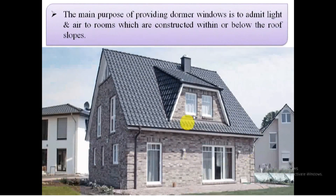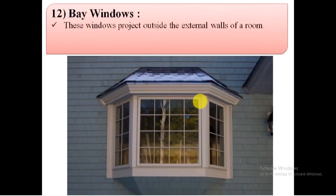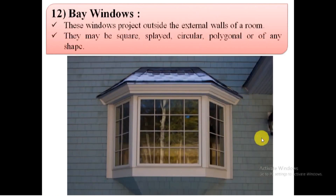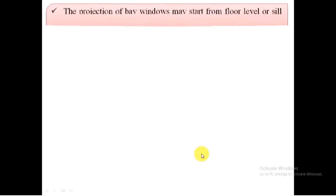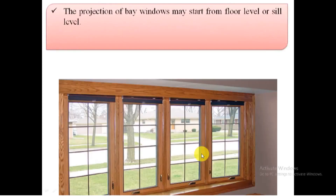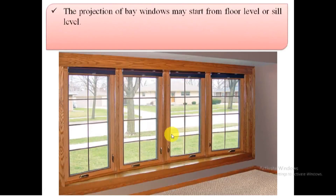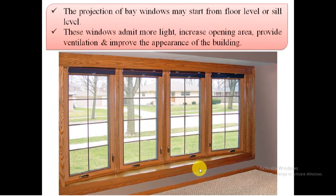12. Bay windows. Bay windows project outside the external wall of the room. The projection of the window beyond the wall can be rectangular, triangular, circular, or polygonal in plan. Such windows are provided to get an increased area of the opening for admitting greater light and air. They also provide extra space in the room and improve the appearance of the building.